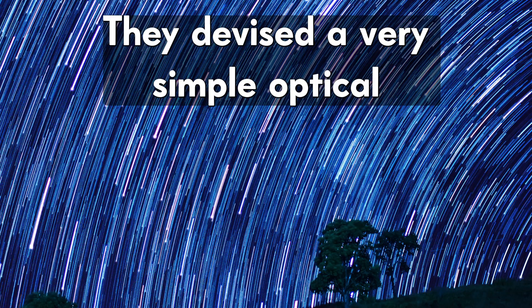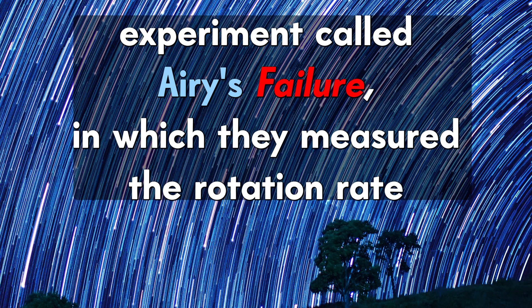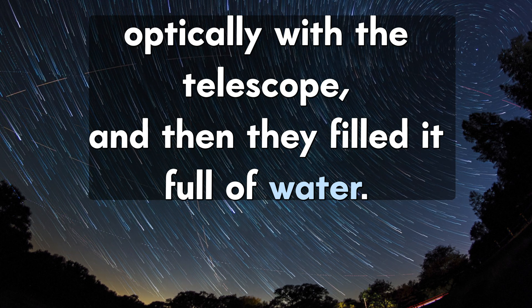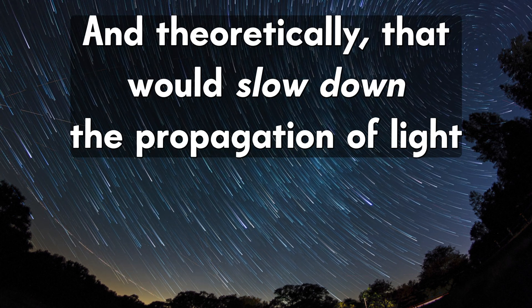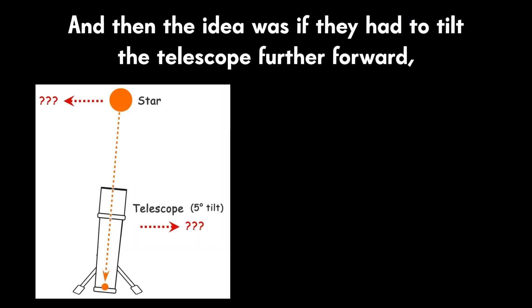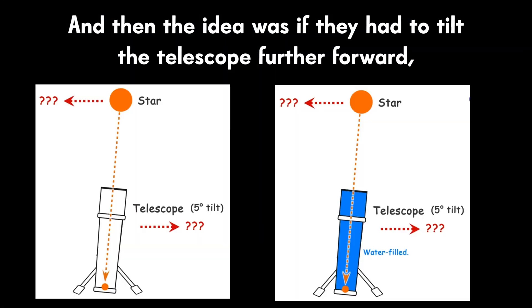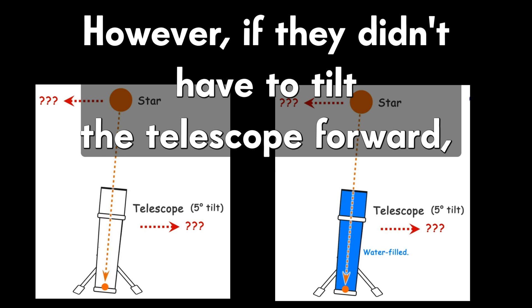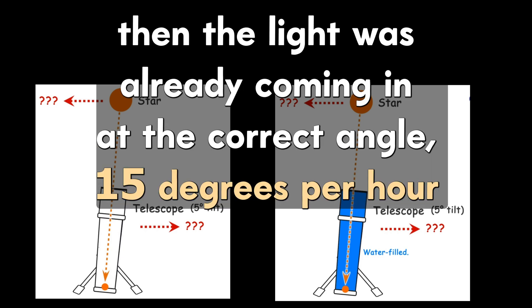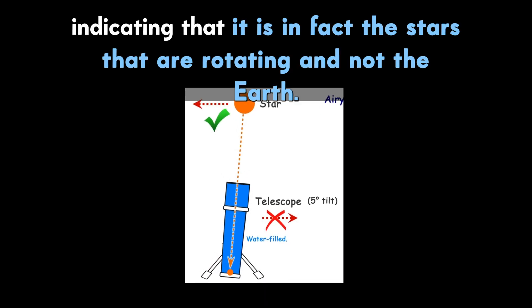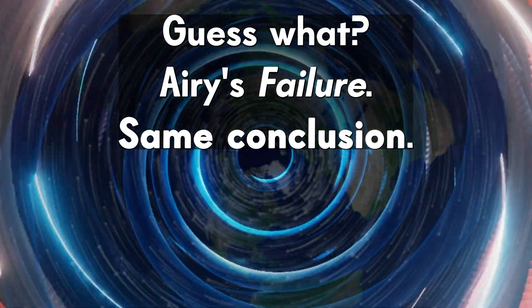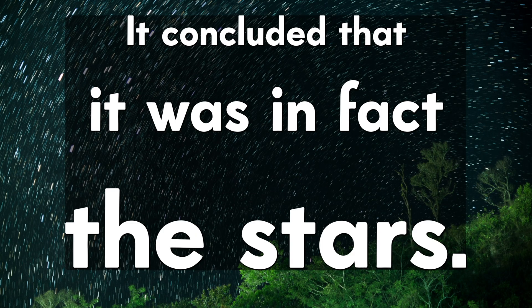They devised a very simple optical experiment called Airy's Failure in which they measured the rotation rate optically with the telescope. And then they filled it full of water and theoretically that would slow down the propagation of light through the telescope. And then the idea was if they had to tilt the telescope further forward, then the light would not be coming in at the correct angle. However, if they didn't have to tilt the telescope forward, then the light was already coming in at the correct angle of 15 degrees per hour, indicating that it is in fact the stars that are rotating and not the Earth. Guess what? Airy's Failure. Same conclusion. It concluded that it was in fact the stars.